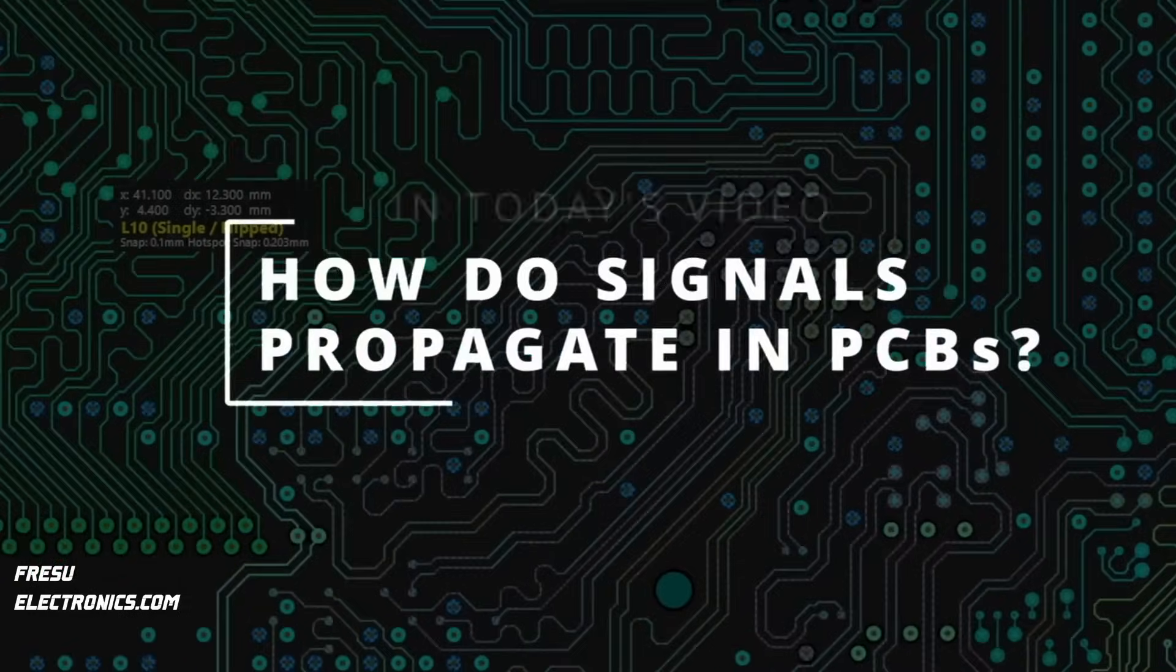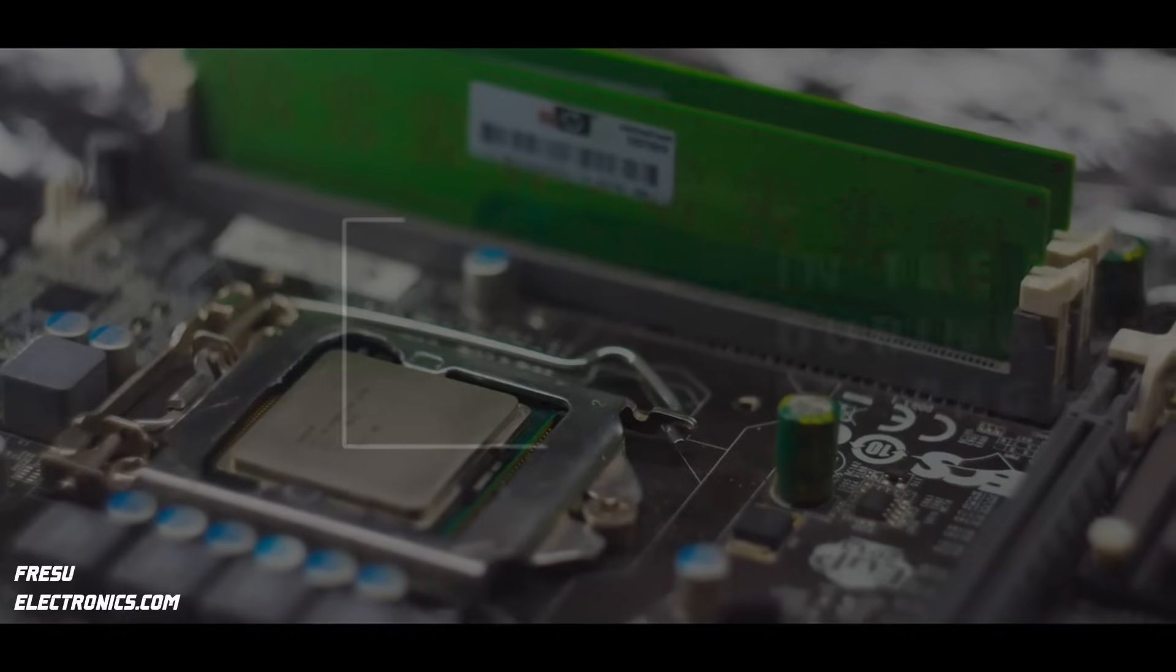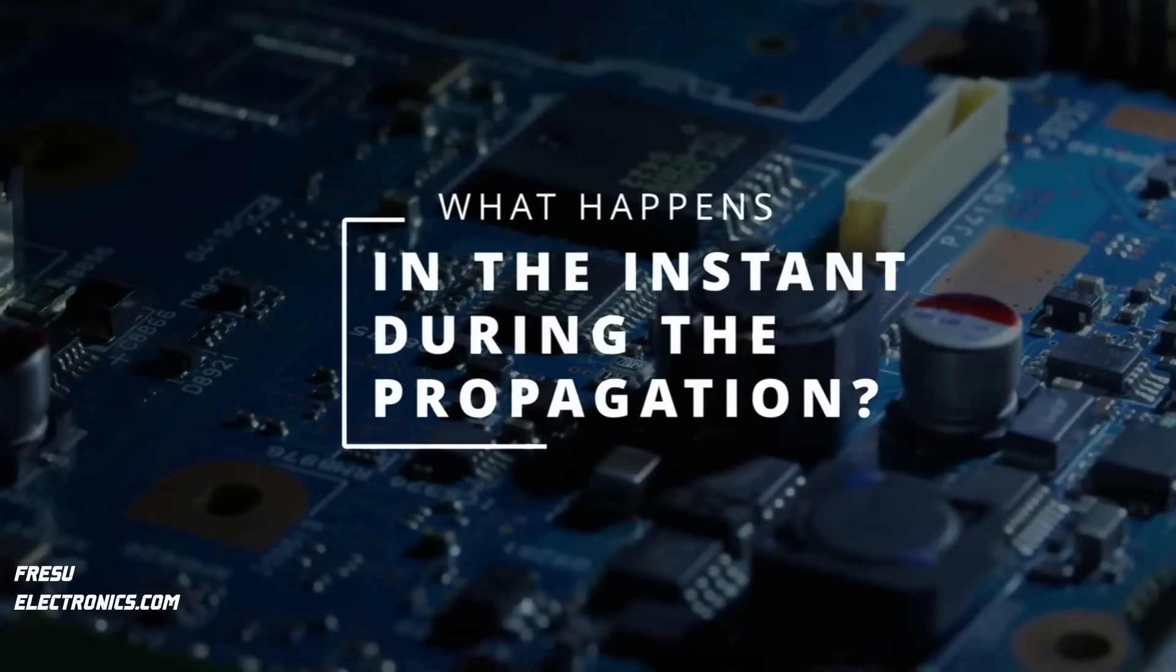In this video we're going to discuss how signals propagate in PCB and most importantly what happens in the instant when the signal is propagating through the transmission line.